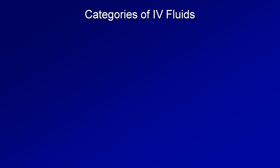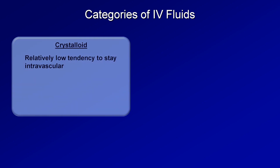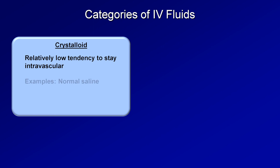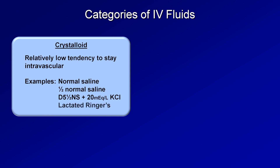By far the most commonly used category is what is referred to as crystalloid fluid. These are electrolyte solutions which have a relatively low tendency to stay intravascular. Common examples include normal saline, half normal saline — which literally has a concentration of 50% that of normal saline — the commonly used maintenance fluid D5 half normal saline plus 20 mEq per liter of potassium chloride, and lastly, a somewhat more complex solution called lactated ringers.